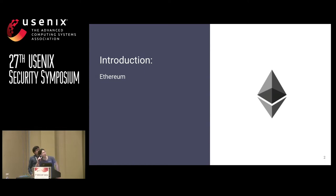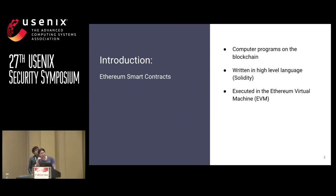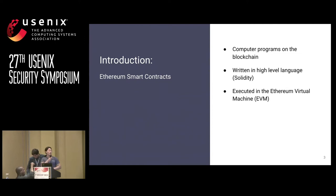Ethereum, as we know, is the second largest blockchain-based cryptocurrency. But in addition to regular accounts on the blockchain, Ethereum also features smart contracts. Smart contracts are essentially computer programs, so they can be used for much more advanced functionalities other than simple balance transfer, as in regular accounts. For example, they can be used for auctioning, crowdfunding, or even lottery or gambling games.